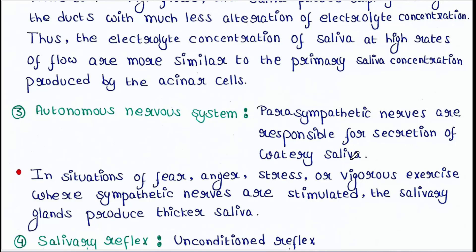Regarding the autonomic nervous system: parasympathetic nerves are responsible for secretion of watery saliva. Parasympathetic nerves work when we are in a normal, relaxed state, and they are responsible for the secretion of watery saliva.